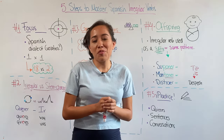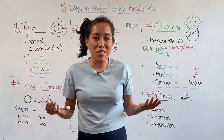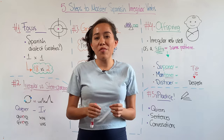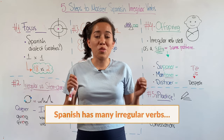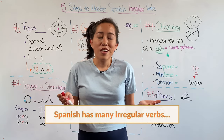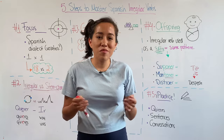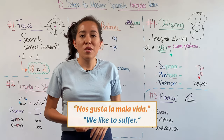I have very bad news for you. In Spanish, we have a lot of irregular verbs and we use them a lot. I'm sorry — nos gusta la mala vida. We like to suffer.